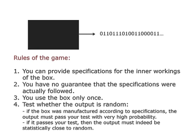Let me spell out the rules of the game more carefully. You're allowed to say what should be in the black box — you can specify exactly what goes into it — except that the person who made it may not listen to you. So what's inside is either what you said or something completely different. You use the box only once and test the output. The two conditions are: if the box was manufactured to your specifications, the output should pass your test with very high probability; moreover, if the output passes your test, then no matter what's in the box, the output should be statistically close to random.